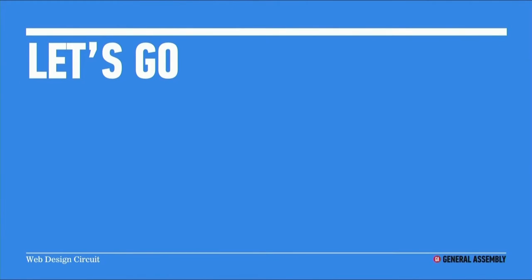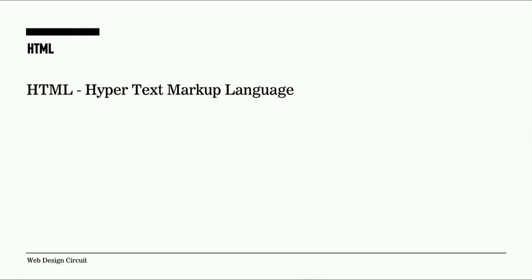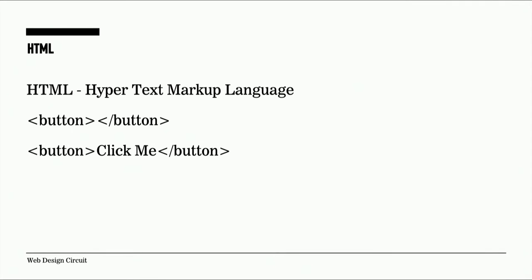Let's get started with the basics of web design. HTML stands for Hypertext Markup Language. It's the standard code used to create web pages — browsers can read HTML files and render them to visible and audible pages. Think of this as the framework of your page. HTML tags typically surround text, which allows browsers to see when a specific type of content starts and ends. The ending tag always has a forward slash.